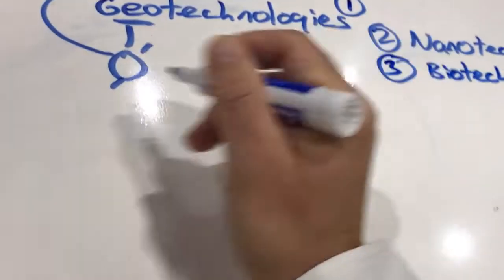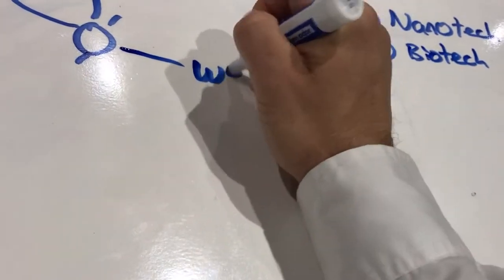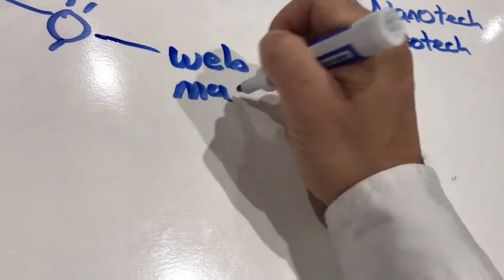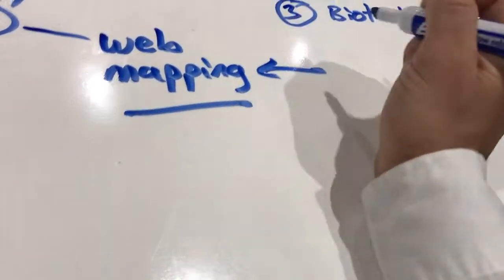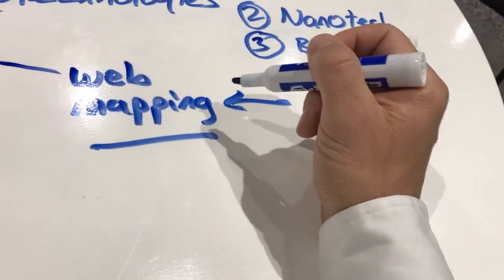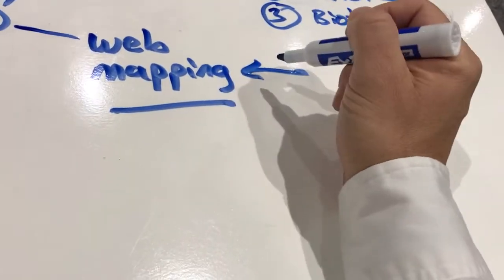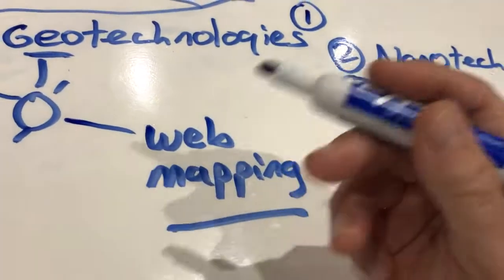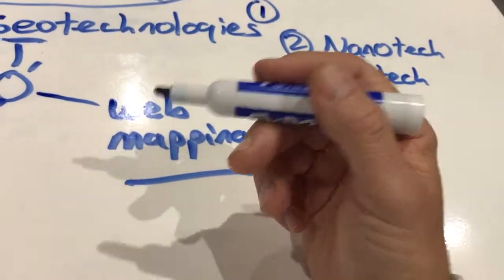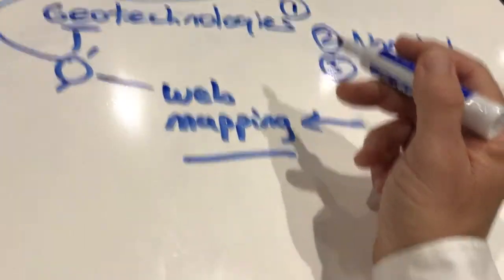And geotechnologies include several things. Web mapping, which is not just maps online, but all about doing things with software as a service, with cloud-based services. Web mapping, understanding the world through manipulating, adding to, presenting with online geospatial data.